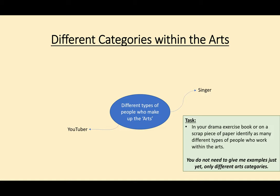Okay, everybody, welcome back. So I'm going to point you to the green box in the corner of the video. It says: in your drama exercise book, or on a scrap piece of paper, identify as many different types of people who work within the arts. In bold underneath, it says you do not need to give me examples just yet — just different categories. I have two sets of people who I think would be defined as arts categories.